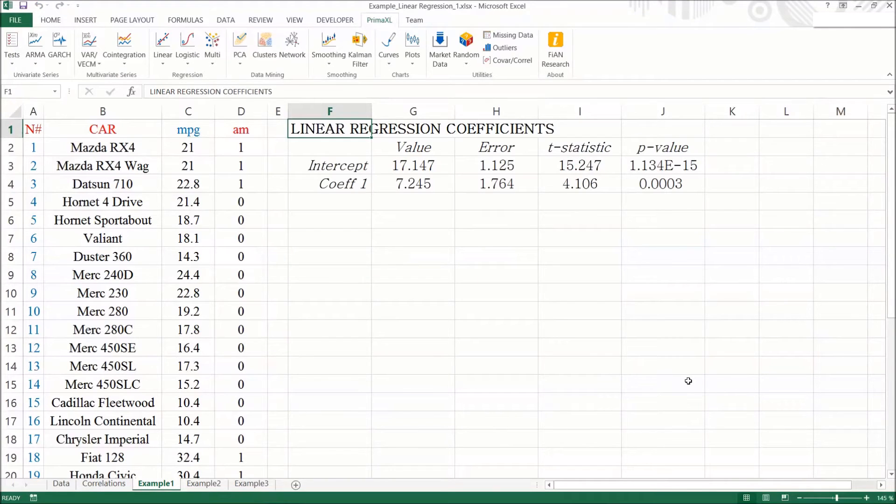Great! We have the result. The intercept, or beta0, is 17.147, which is the same as we got by doing the group average. So far, so good! And the beta1 is 7.245, which is the difference of the group averages we had calculated before.